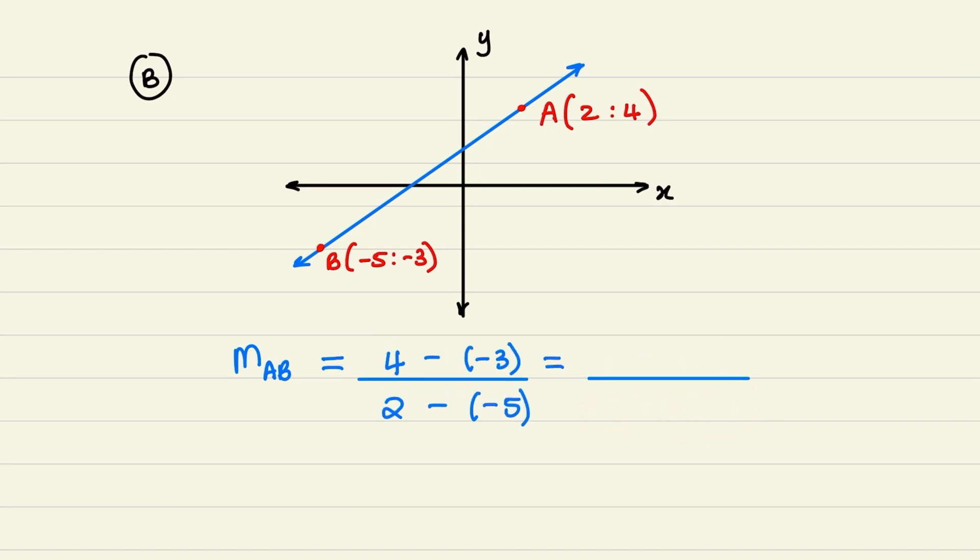Now when I simplify, I have 4 minus minus 3. And those two negatives will turn into a positive. So it will be 4 plus 3 in the numerator. Then I have 2 minus minus 5. So these two negatives will become positive. So I'll have 2 plus 5 in the denominator.